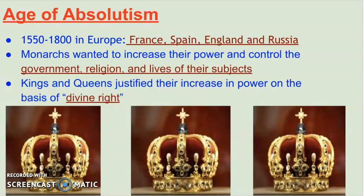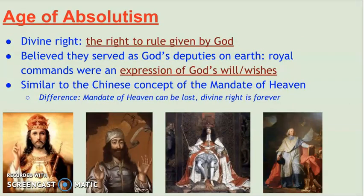And they justify themselves. They say, listen, I should be able to control everything because I have the divine right, which is a concept we've kind of studied before. This should sound familiar to you all. We've spoken about the word divine before. If you think back to the beginning of the year, we spoke about it in Egypt and in China with the mandate of heaven, with the pharaohs in Egypt claiming that they had the power to rule because the gods gave it to them. Here in the 1800s, we see these absolute monarchs saying that God has given them the power to rule. So that divine right is the right to rule given by God. Any command that comes from a royal, from the king or queen, is really God's will, and people went with it for a very long time.